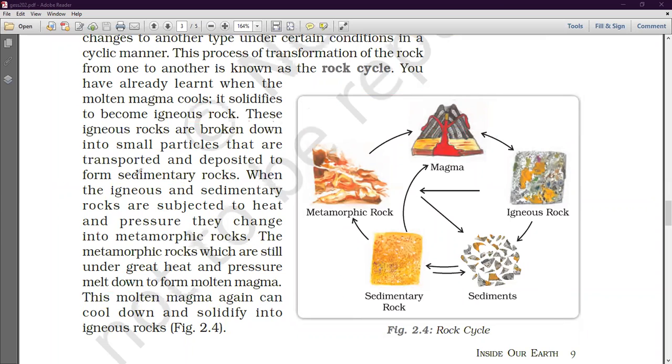So, this igneous rock we have studied, how is sedimentary rock? When igneous and sedimentary rock are subjected to heat and pressure, they change into metamorphic rock. The metamorphic rock which are still under great heat and pressure melt down. And if we give heat and pressure, what happens in this metamorphic rock? It will melt. What happens in the molten magma? So, this is a whole cycle process.